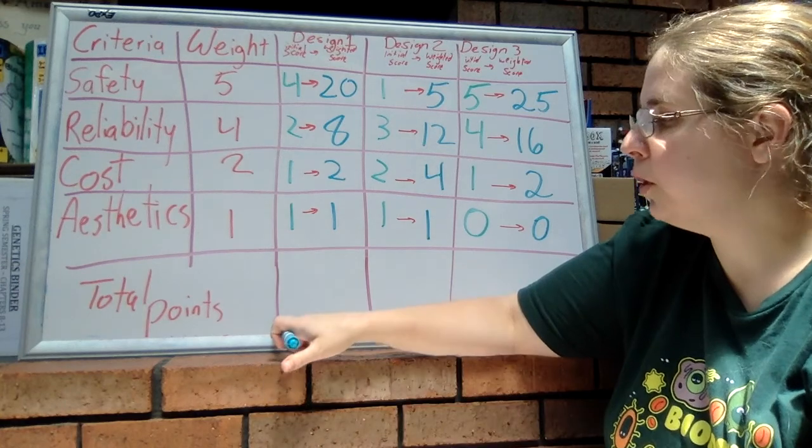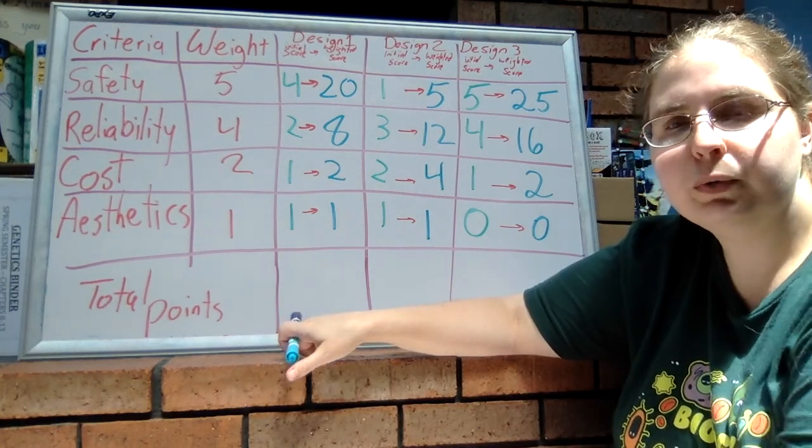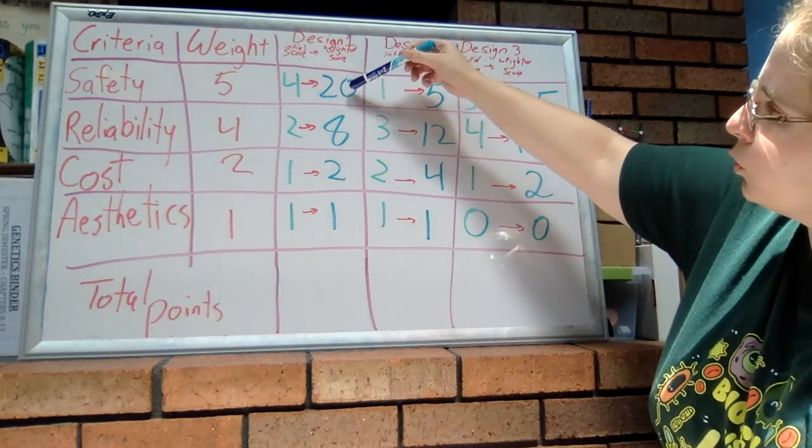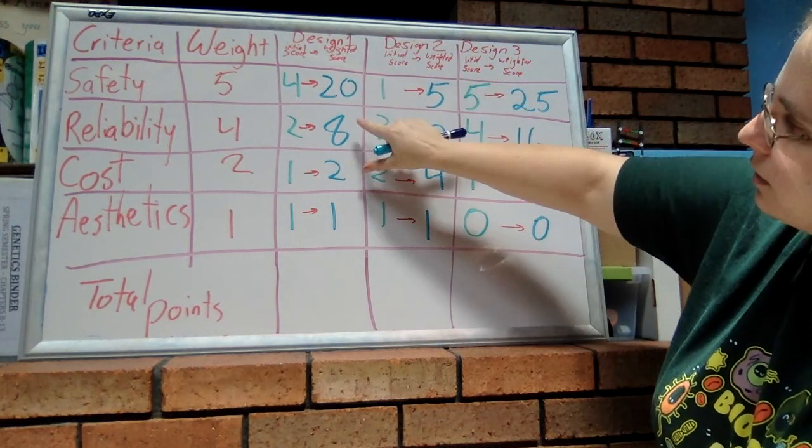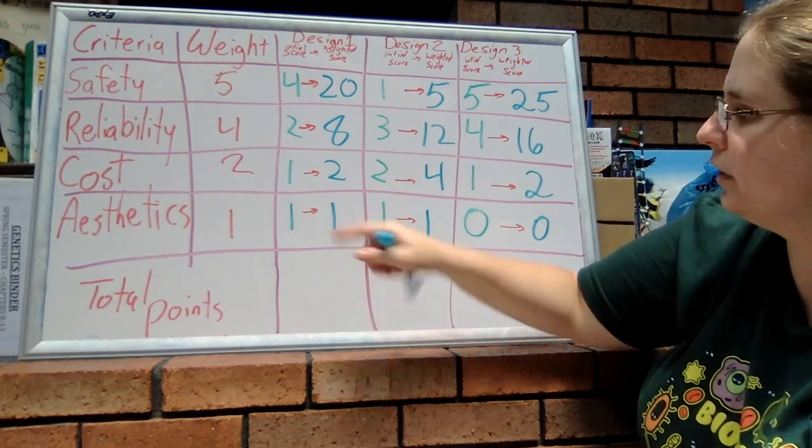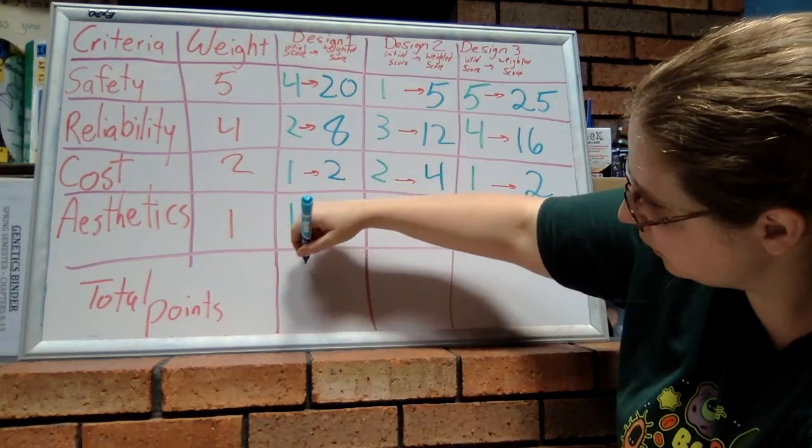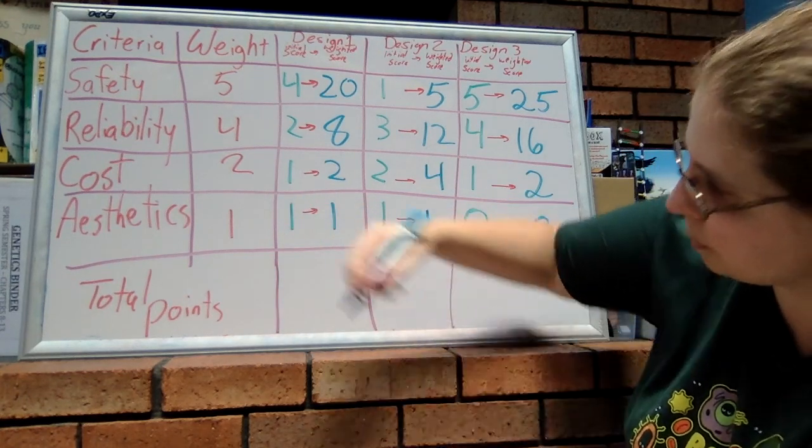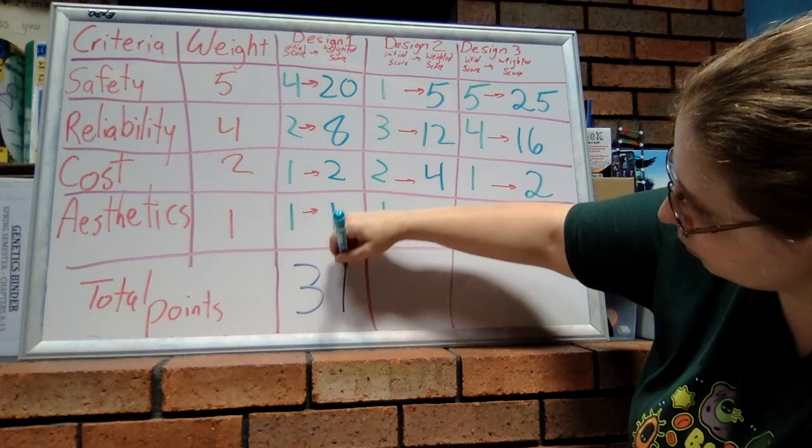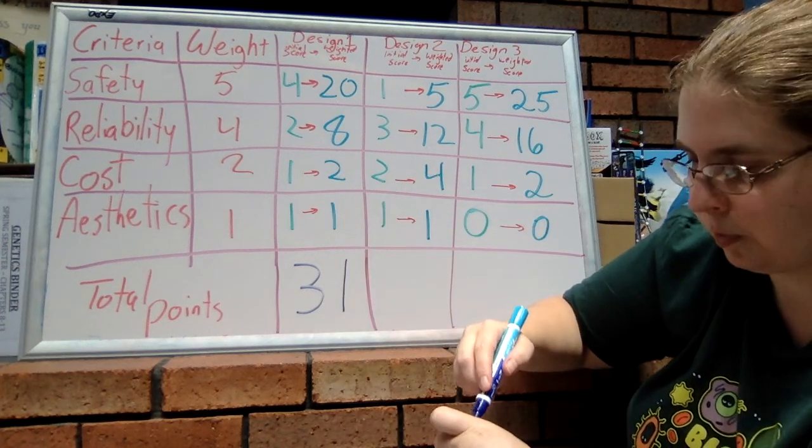So now to find the total points, we want to add up all of the weighted scores. So 20 plus 8 plus 2 plus 1. So that's 8 plus 2 is 10, plus 20 is 30, plus 1 is 31.